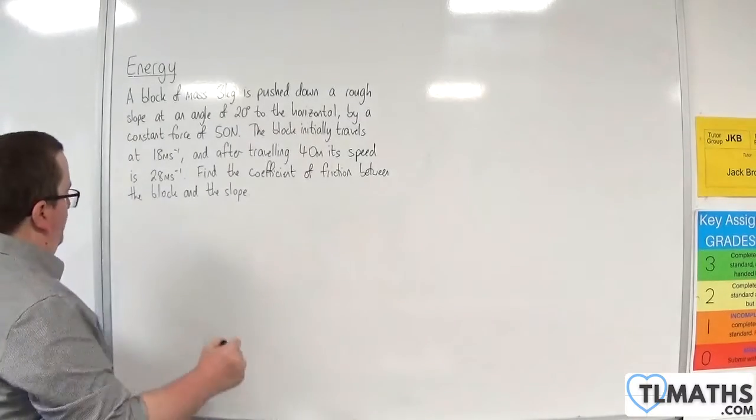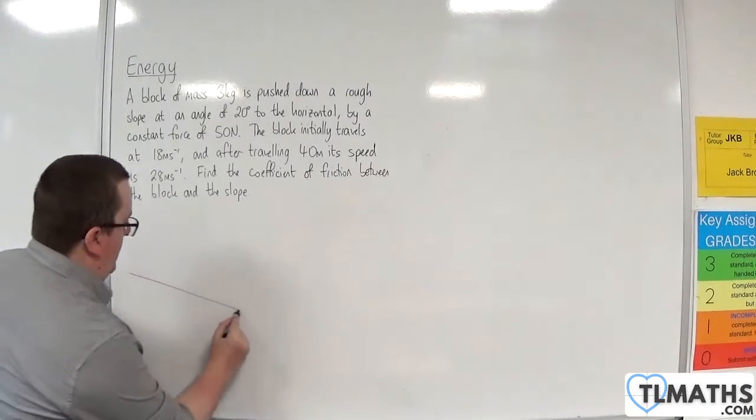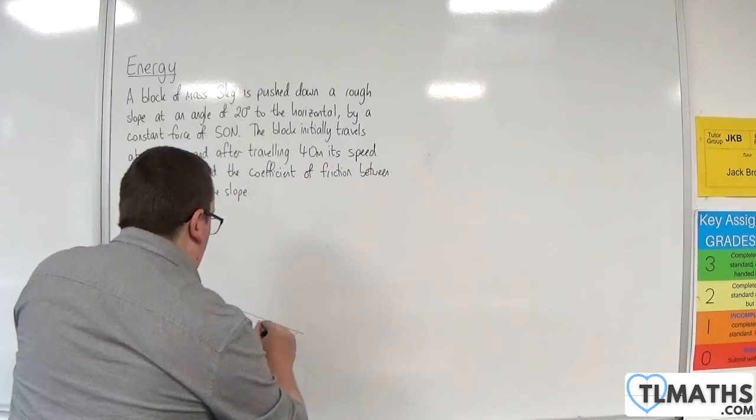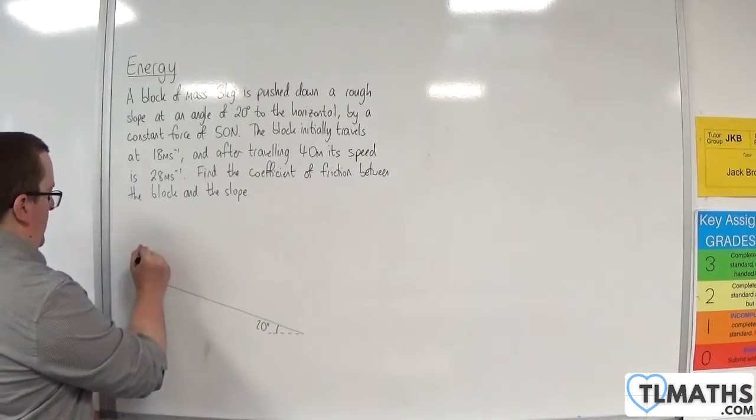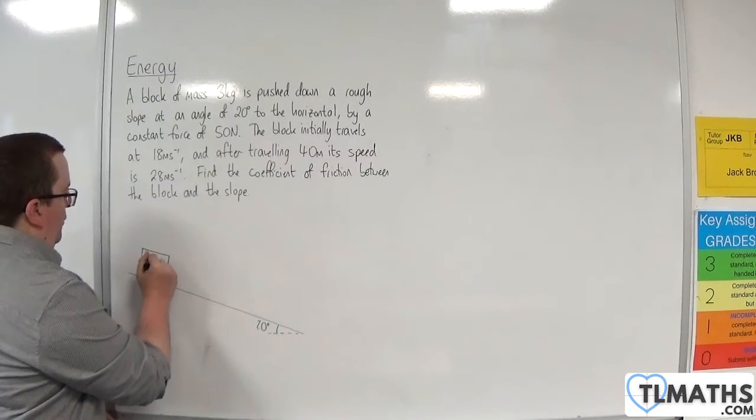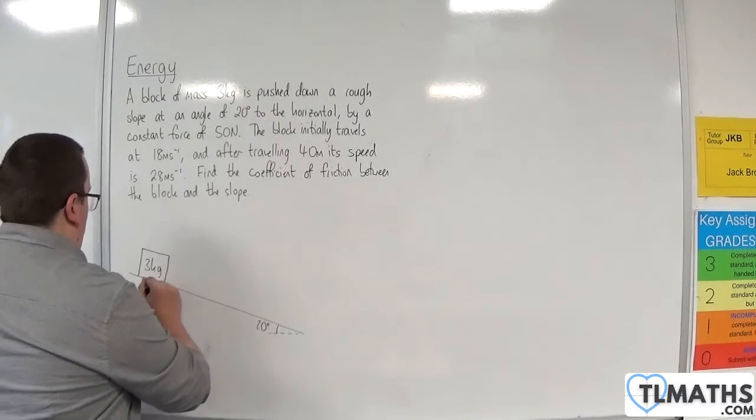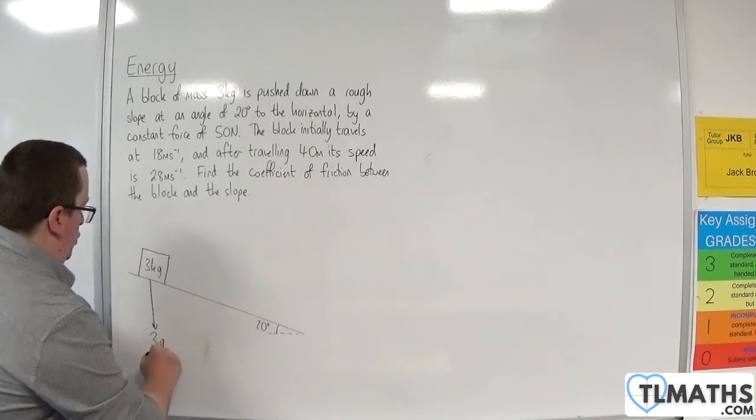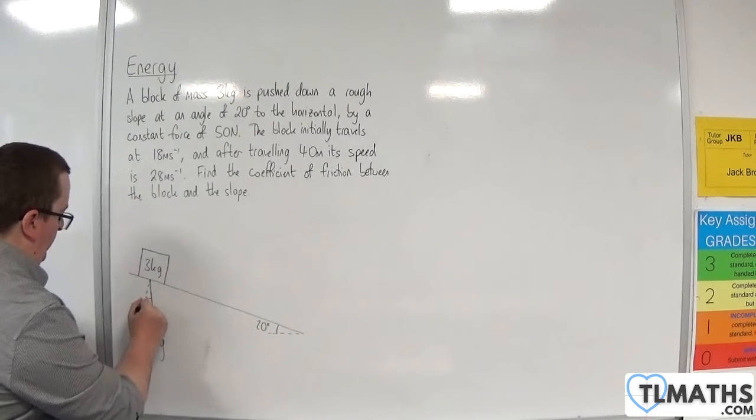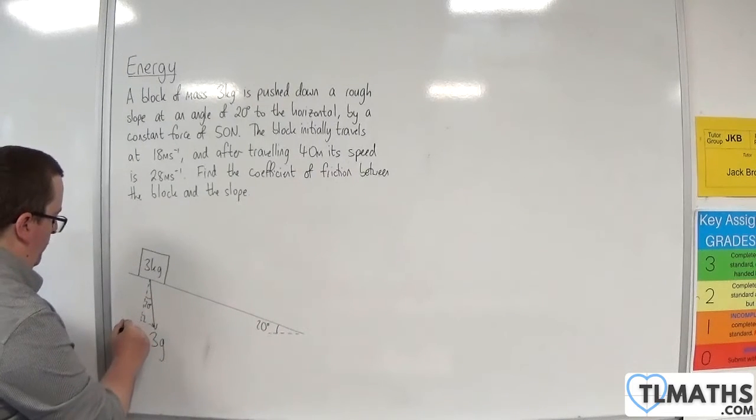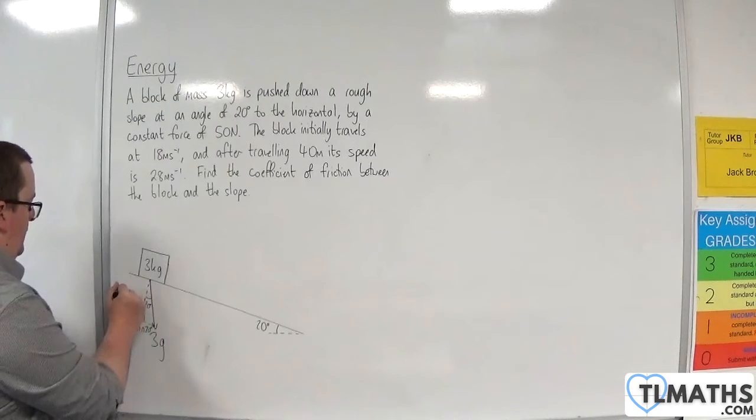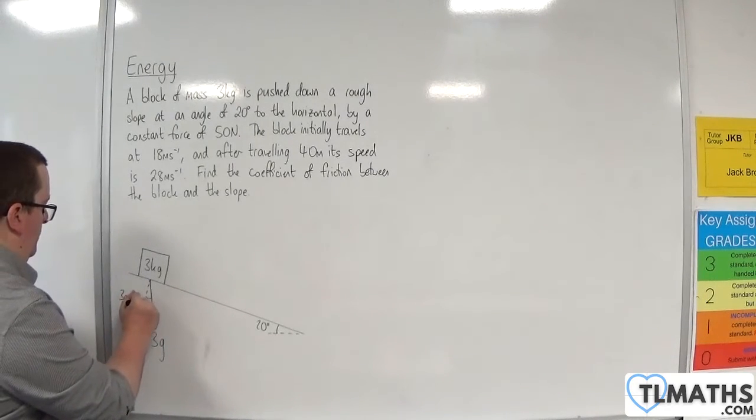So let's draw a diagram. Here is the slope at 20 degrees to the horizontal, and here is my block initially. So it has a mass of 3 kilos, so its weight is 3G. Let's break it up into its components: 3G sine 20 and 3G cosine 20.